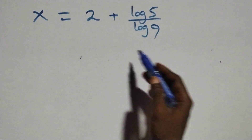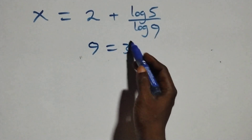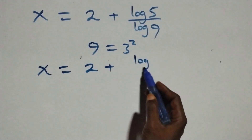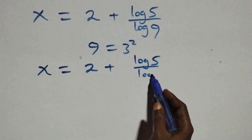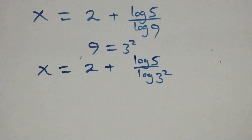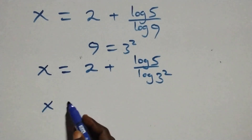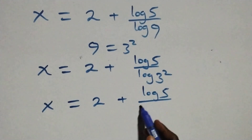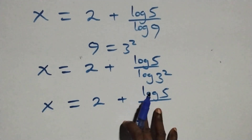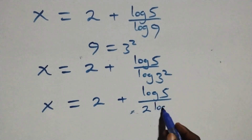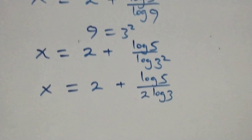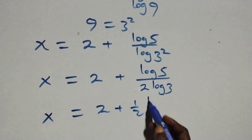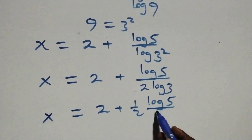Then we can write 9 as 3 times 3, that's 3 squared. Applying the power rule of logs to log 9 = log 3² = 2 log 3, this becomes x equals 2 plus 1 over 2 times log 5 over log 3.